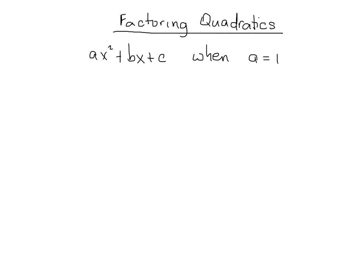So what does that mean? If a is equal to 1 you're going to see nothing written here because if a is equal to 1 you're just going to have x squared. 1x squared is the same as x squared. So that's the first type that we'll look at.